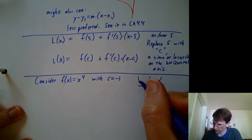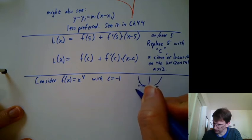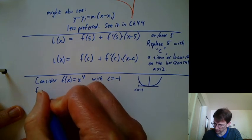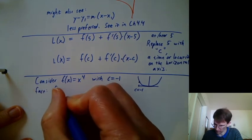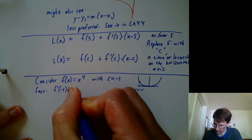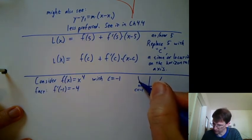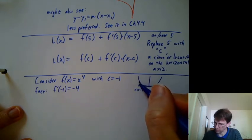I'll give you a helpful fact that f prime at negative 1 equals negative 4. Can you see that the slope of a tangent line there, or the slope of a linear approximation, would at least be negative?